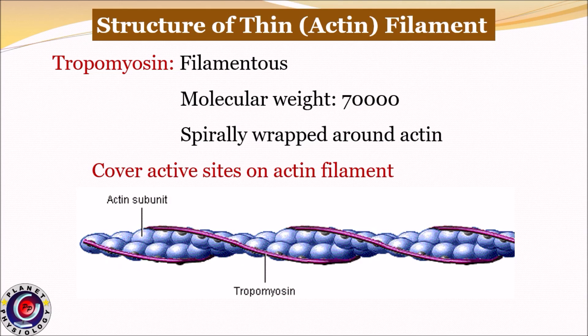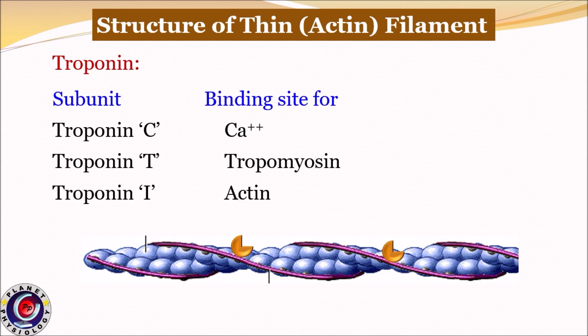Another filamentous protein that constitutes the actin filament is tropomyosin. Its molecular weight is 70,000, and it wraps around actin molecules in such a way that at rest it covers all the active sites over the actin molecule, thus preventing actin-myosin interaction.